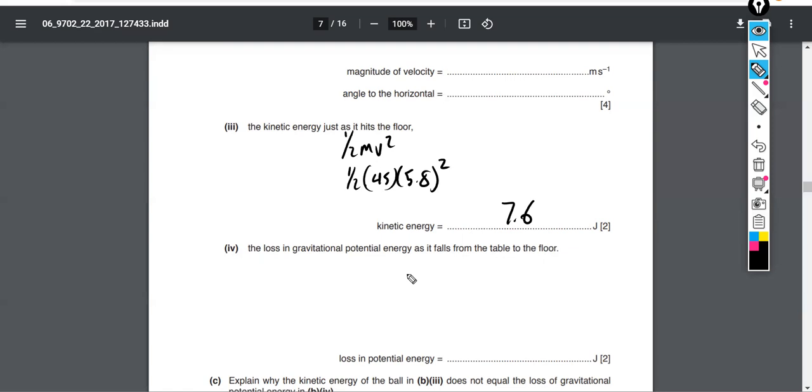For the loss in gravitational potential energy, we're going to calculate it as mgh. The mass is 0.45 kilograms, g is still 9.81 per kilogram, and the height is still 1.25 meters. That's the equation for kinetic energy. So this gives us about 5.5 joules of potential energy.